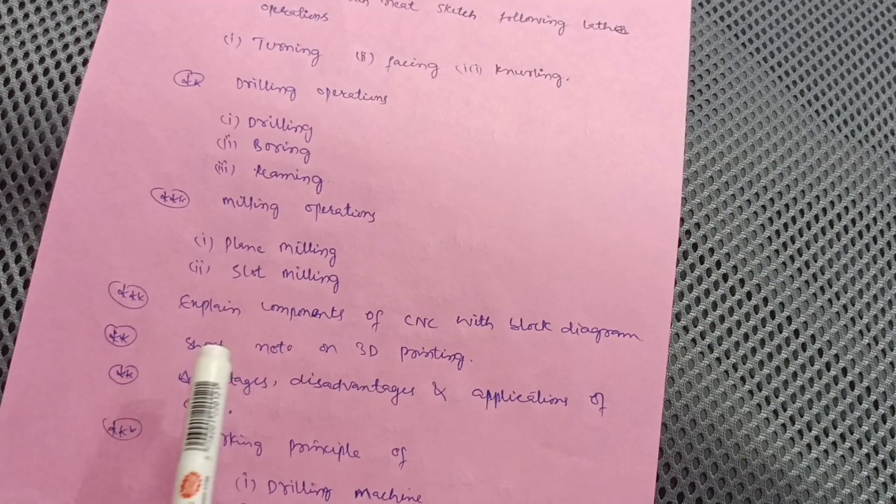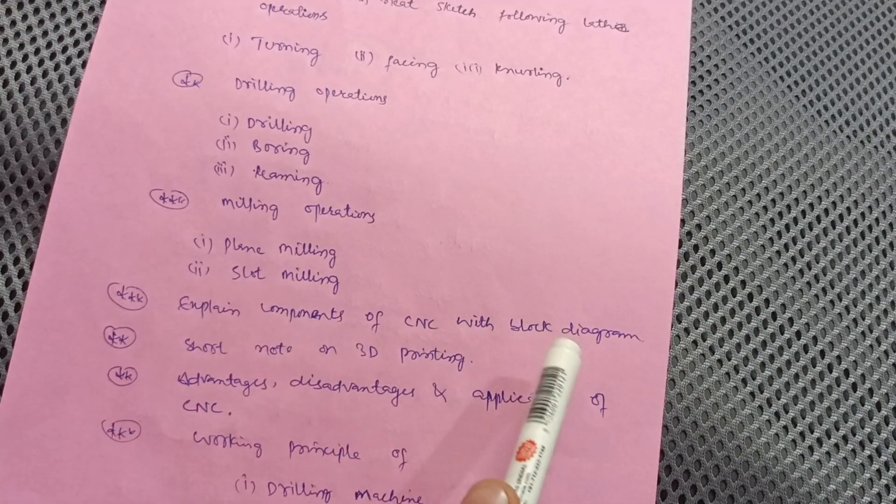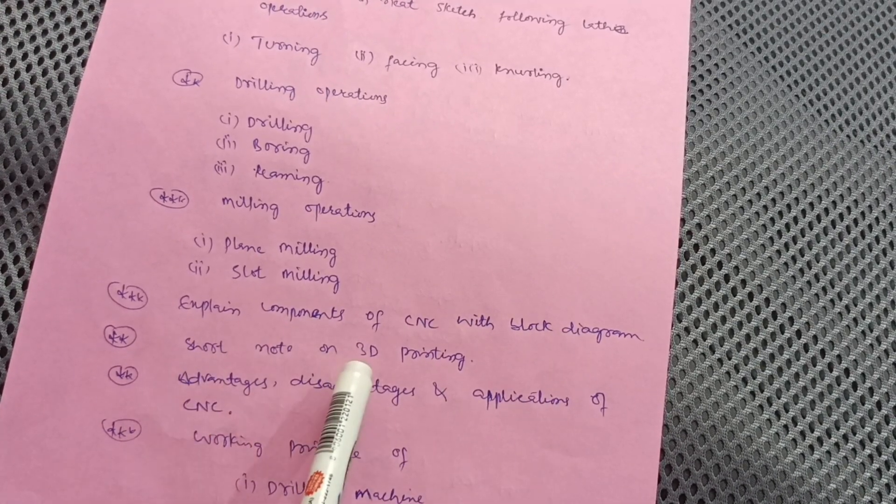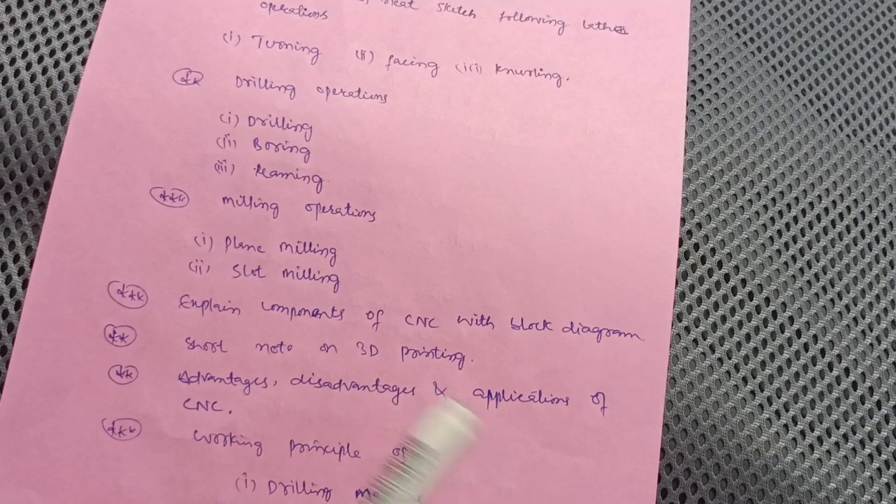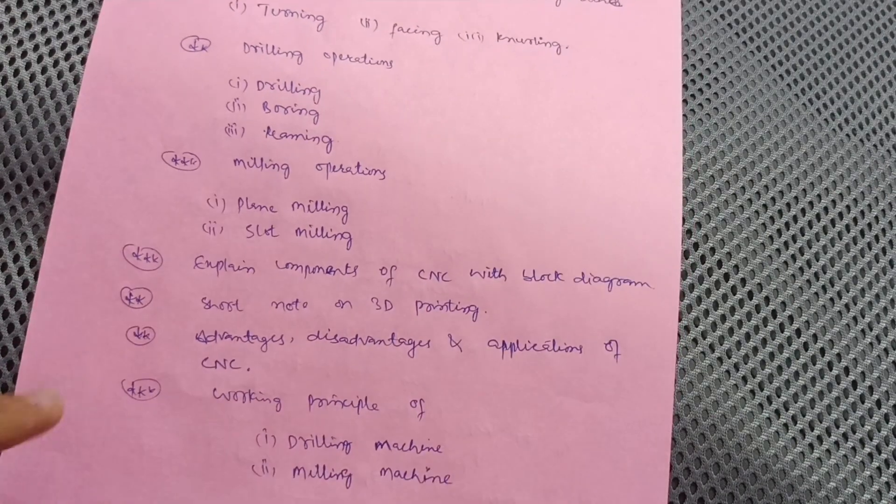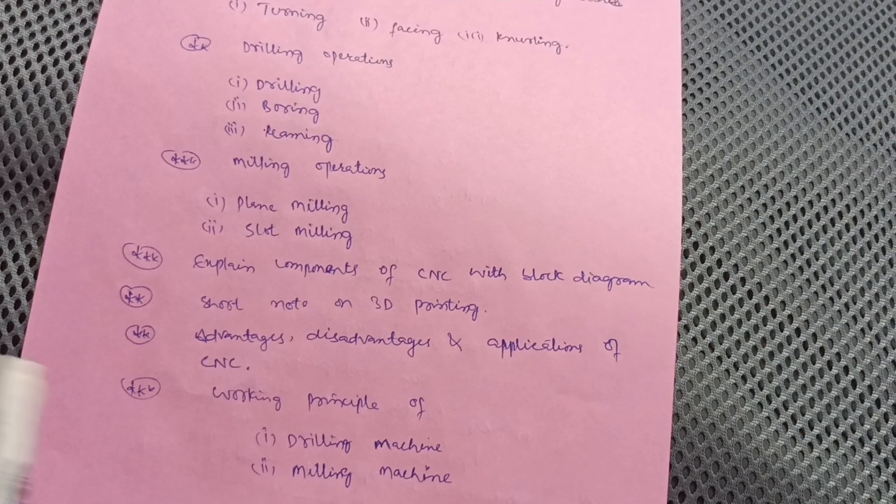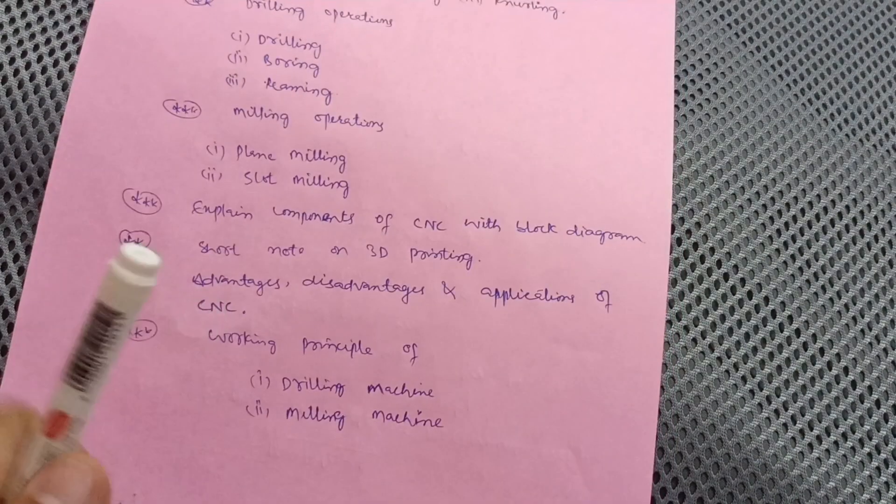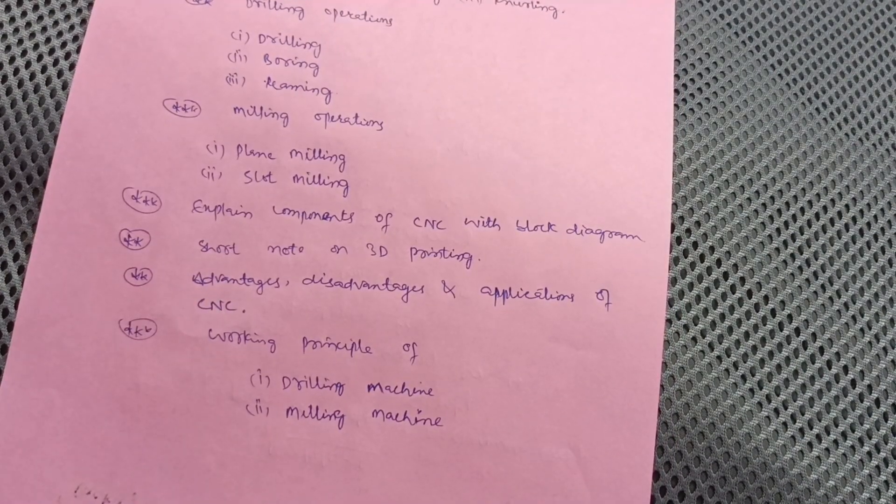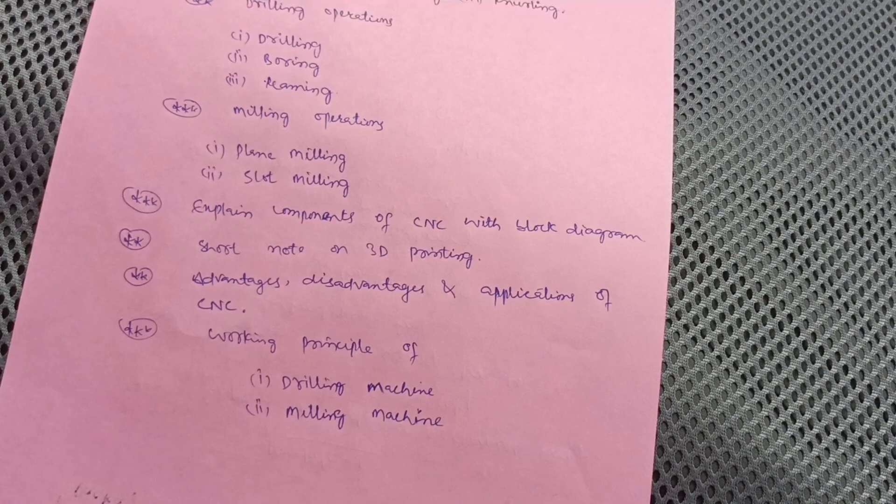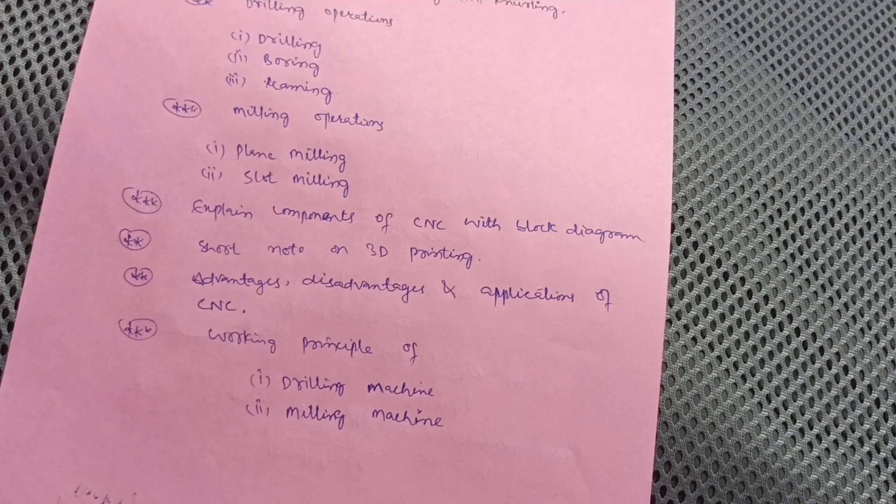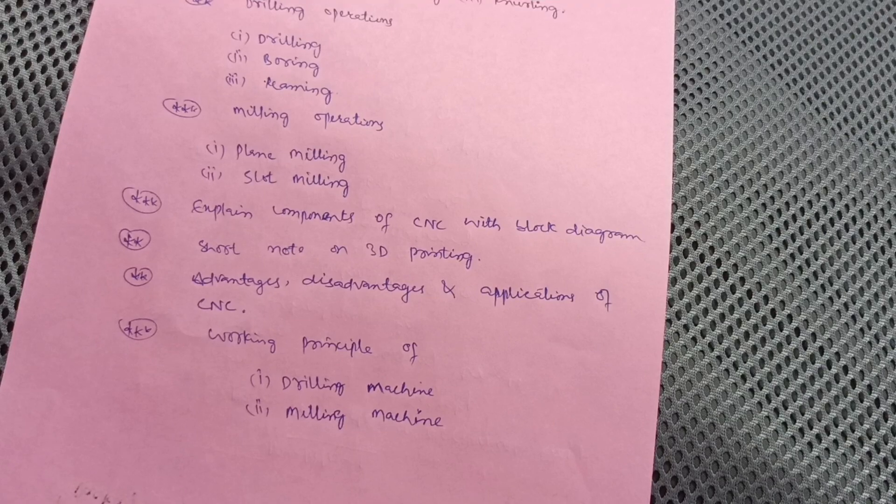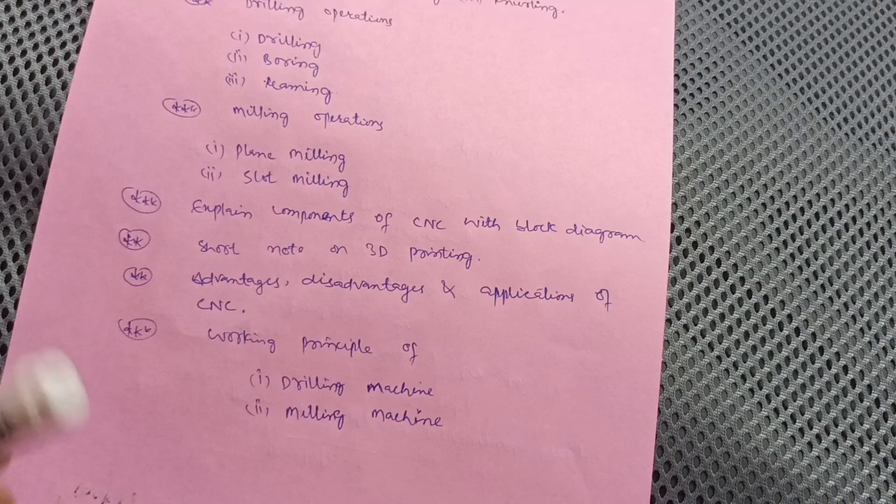Then explain components of CNC with block diagram, and short note on 3D printing and advantages, disadvantages, and applications of CNC, that is Computer Numerical Control. Working principle of drilling machine and milling machine: sometimes they will ask five marks questions. You have to write neat sketch and then explain it in a short manner.